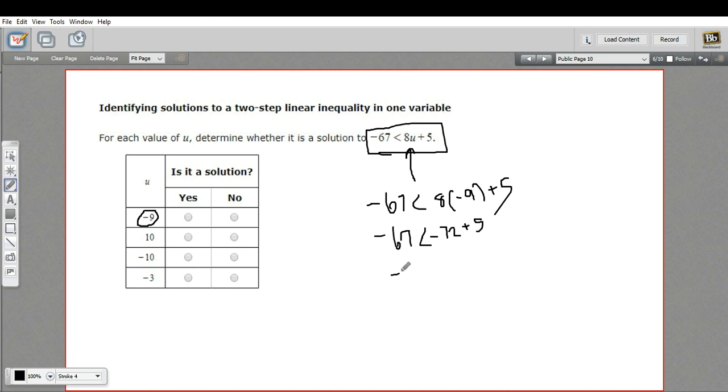And negative 72 plus 5 is negative 67. So the question is, is negative 67 less than negative 67? And no, it's not. It equals it. So this is not a solution.